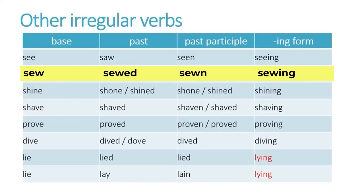With the verb 'sew,' the past tense uses a regular verb ending — ED — sewed. And the past participle takes on the WN ending, like some of the verbs we mentioned before. So it's like this: sew, sewed, sewn. The vowel sound does not change, but the past tense requires an ED ending and the past participle requires a WN ending.